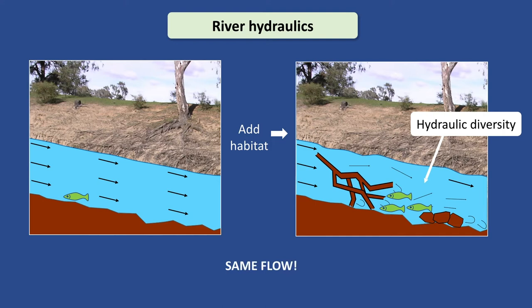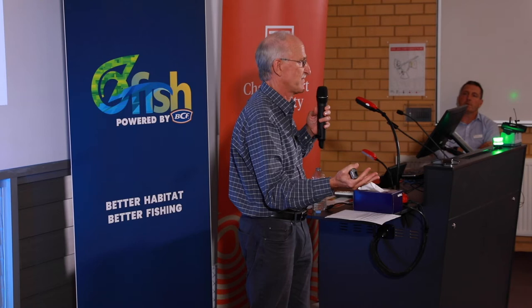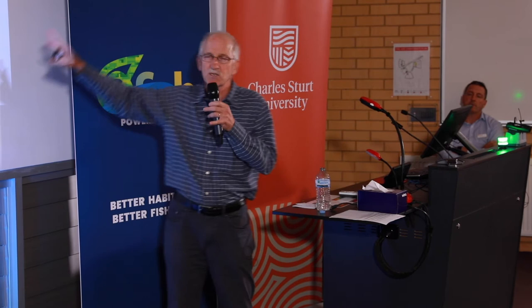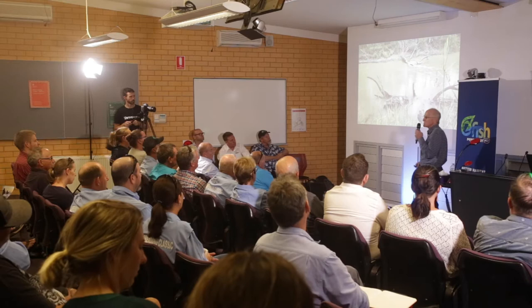When you add habitat, everything starts to mix up. You get fast velocities, slow velocities, you get velocity refuges, turbulence. And this is called hydraulic diversity. Fish love this stuff, and lots of aquatic animals love this stuff. Importantly, this is occurring at the same flow - you haven't asked for any more flow, flow hasn't changed. You just added this structure, you added habitat.